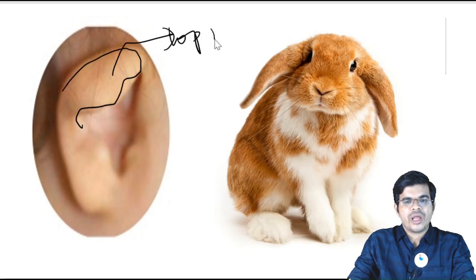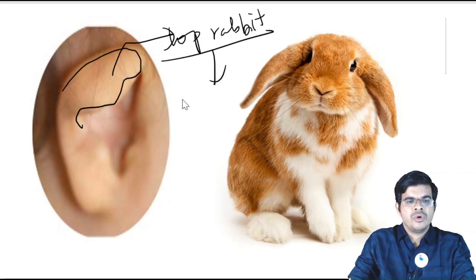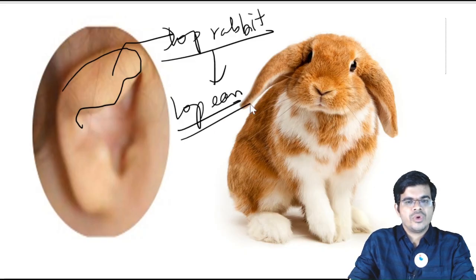And what is this? Here you see the pinna is folded over, and this folded-over appearance is resembling that of a lop rabbit. And hence it got its name — lop ear.